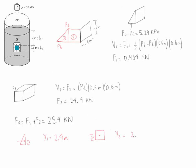Measuring from the top all the way to the centroid of section two, y2 is equal to 2.3 meters. To calculate the resultant location we use the formula FR × yR = F1 × y1 + F2 × y2, giving a value of yR equal to 2.31 meters.